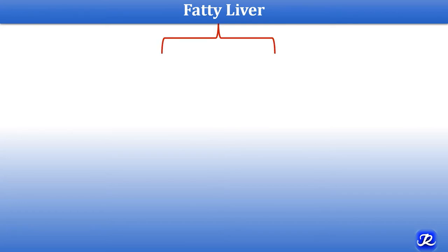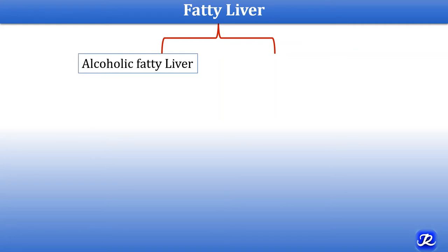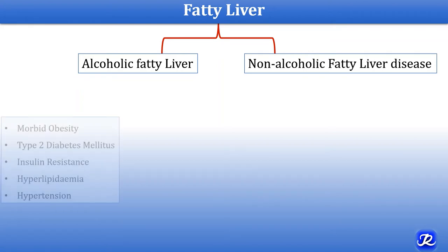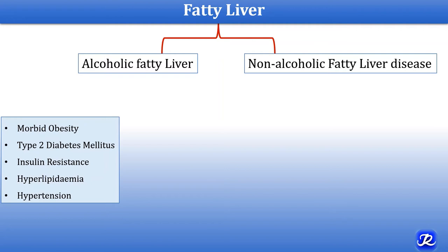Fatty liver is of two types. If caused by chronic alcohol intake, it is called alcoholic fatty liver. If there is no alcohol intake, fatty liver due to any other condition is called non-alcoholic fatty liver disease (NAFLD). Various conditions associated with NAFLD include morbid obesity, type 2 diabetes mellitus, insulin resistance, hyperlipidemia, and hypertension.